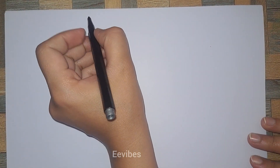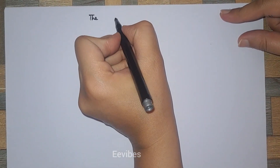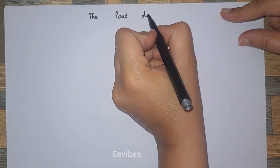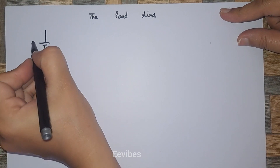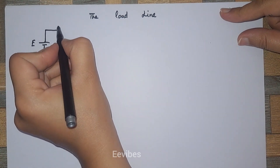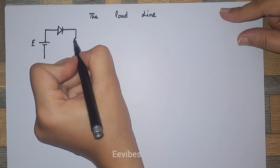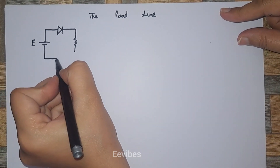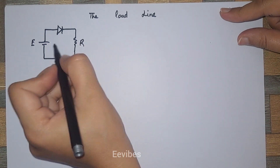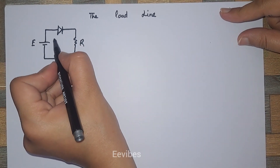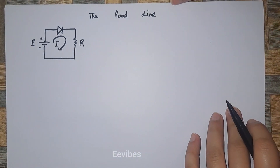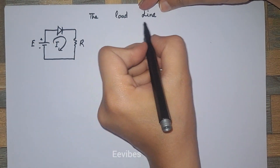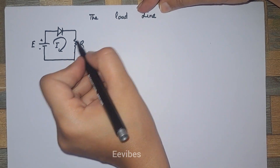Hi everyone, this is Asma Amushtak from the Double E Vibes. In this lecture I will discuss what is the DC load line or the load line of a diode. Whenever you have a source represented by E and you connect it with a diode such that it is forward biased, along with a resistor RL or simply R, which is known as the current limiting resistor. Since it is a closed path, current can be established in the circuit.